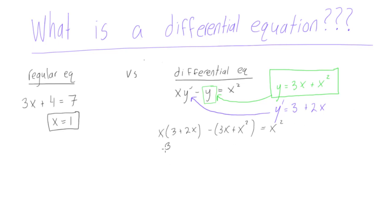Alright, so we're going to distribute this out. We have 3x plus 2x squared, minus 3x minus x squared, is equal to x squared.